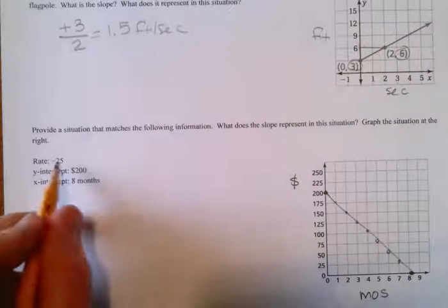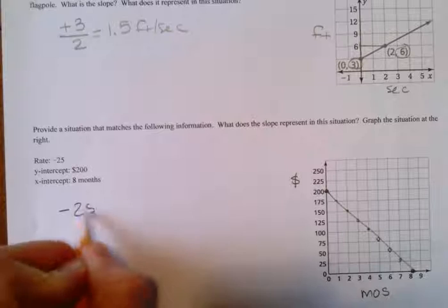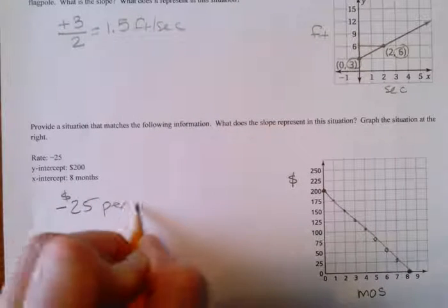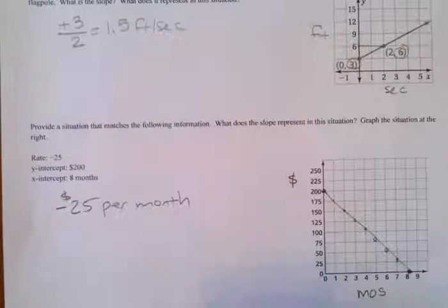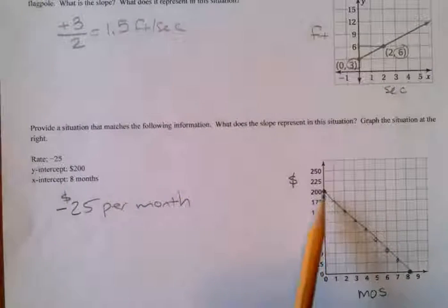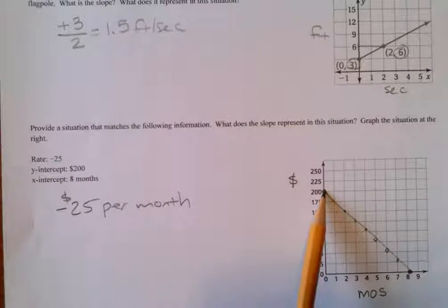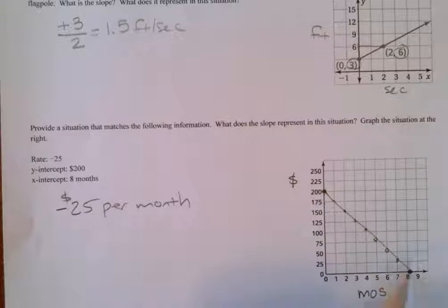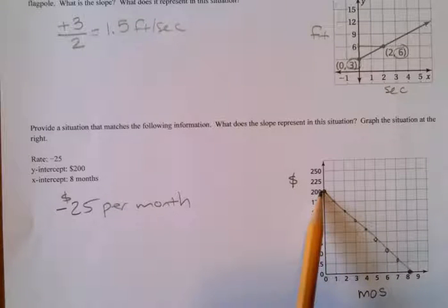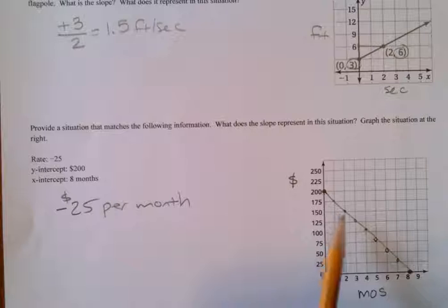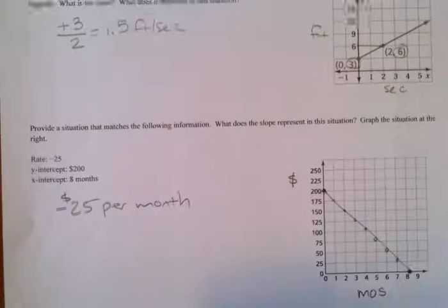So our rate is negative $25 per month. And then you need the explanation of what does this mean? So in my situation, it was start with $200, withdraw $25 per month for eight months until you run out of money.